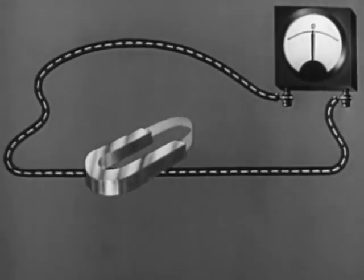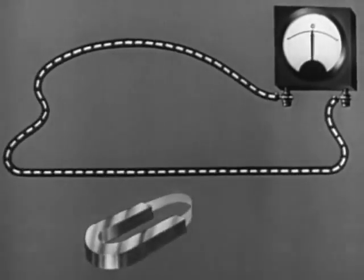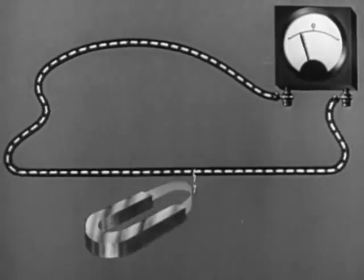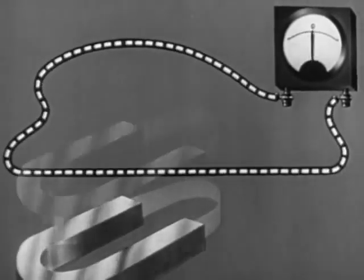We can change the amount of electric current flow in several ways. Move the magnet faster, more current flows. Use a stronger magnetic field, still more current flows.